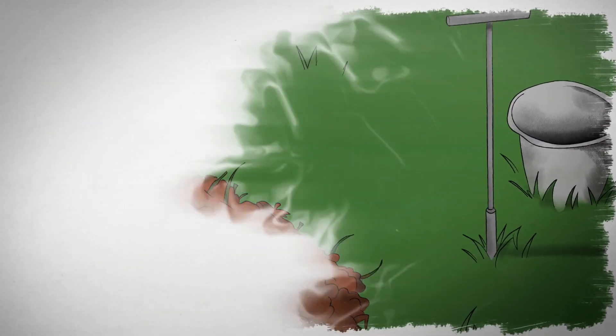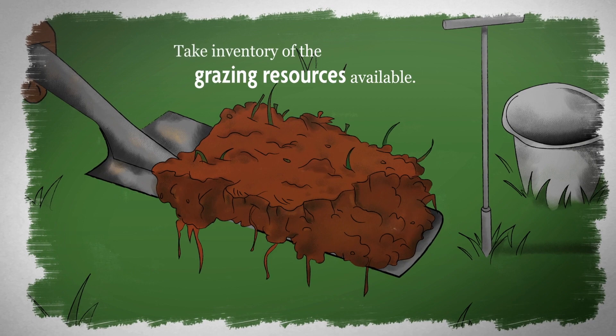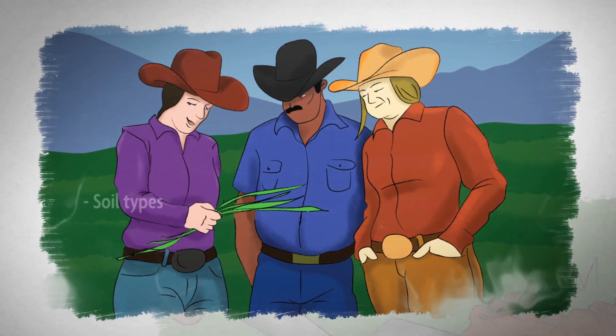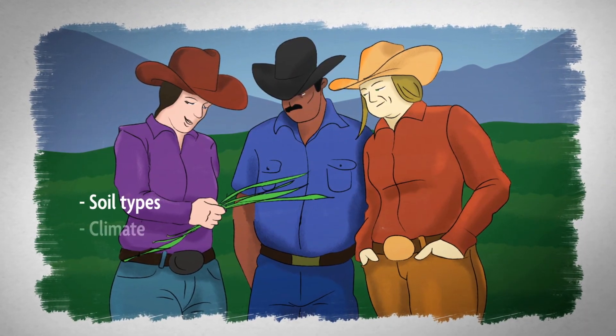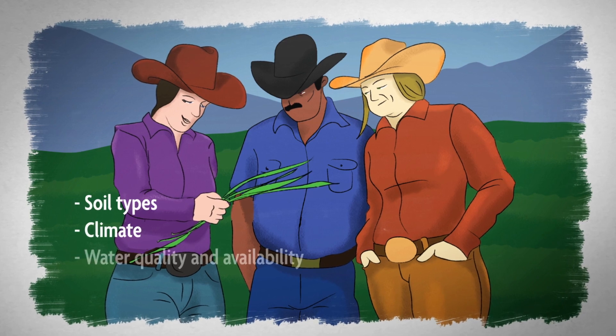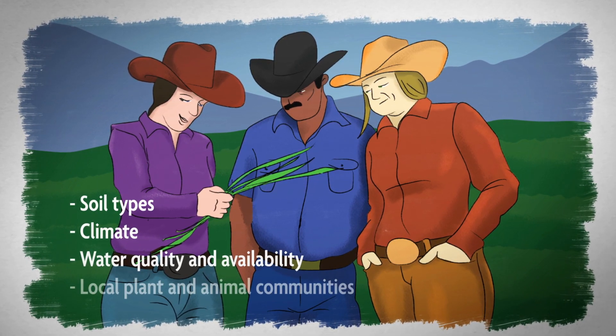Next, take inventory of the grazing resources available. This includes natural resources like soil types, climate, water quality and availability, and the local plant and animal communities.